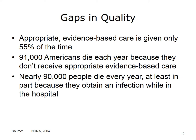These are examples of underuse, misuse, and overuse in our health care system that contribute to poor quality outcomes for patients and their families. According to the NCQA, evidence-based care was given only 55% of the time, and 91,000 Americans died each year because they didn't receive appropriate evidence-based care. Over 100,000 patients were injured as a result of receiving inappropriate or wrong care. Health care quality outcomes in our industry are not as good as they should be and need substantive improvements.